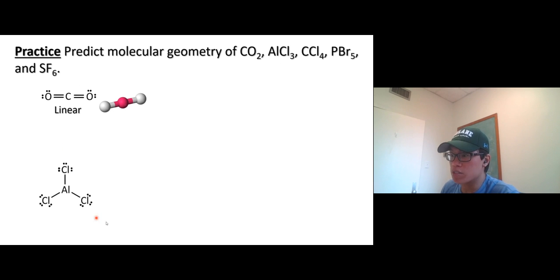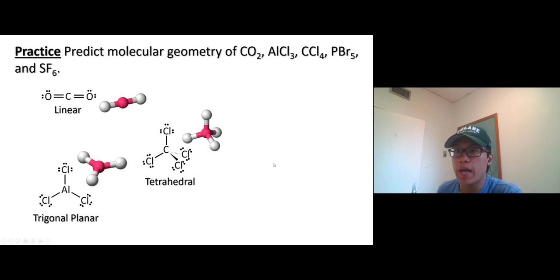Aluminum chloride. So three non-central, the best structure's gonna be trigonal planar. All right, now CCl₄. We have carbon tetrachloride. So the best structure for four non-central, that's tetrahedral, looks like that. All right, next one.